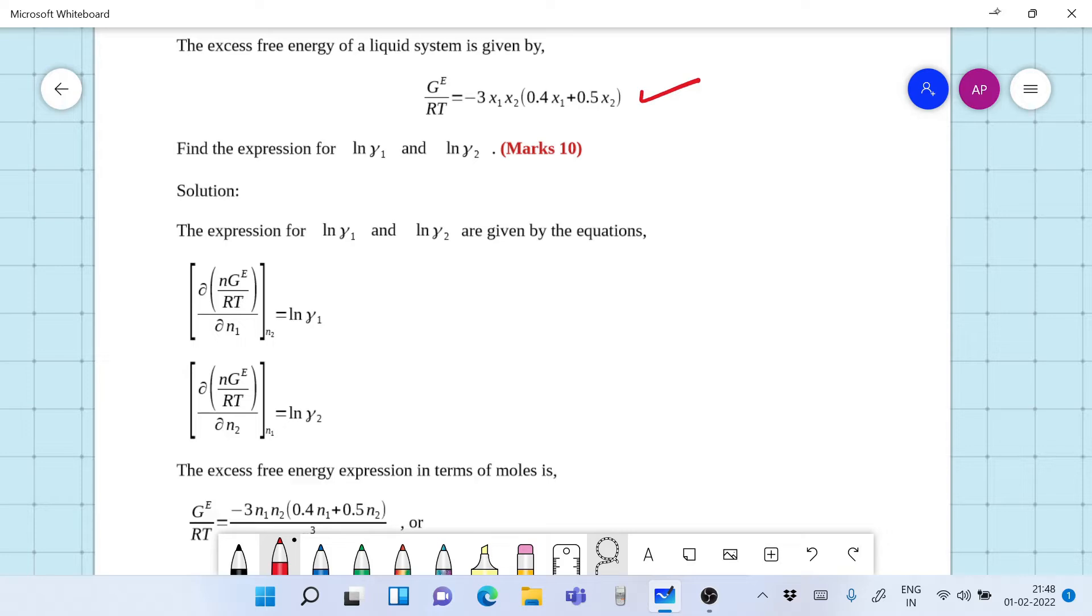In a binary system what do we have is n1 plus n2 is equal to n. We have only two components that is 1 and 2. So this particular differential of excess Gibbs free energy is with respect to component 1 holding component 2 constant and this gives us ln gamma 1. Similarly differentiating with respect to component 2 by holding component 1 gives you ln gamma 2.